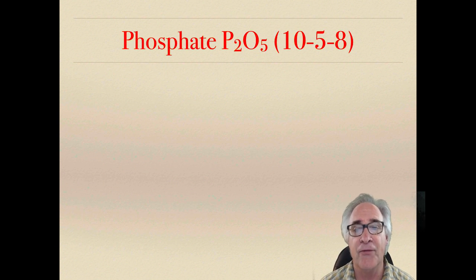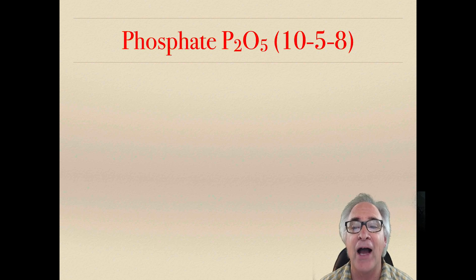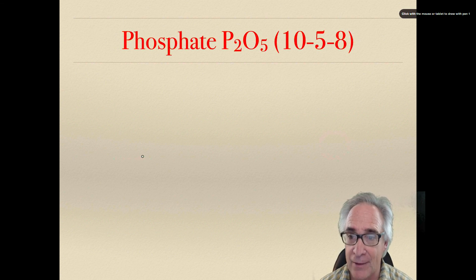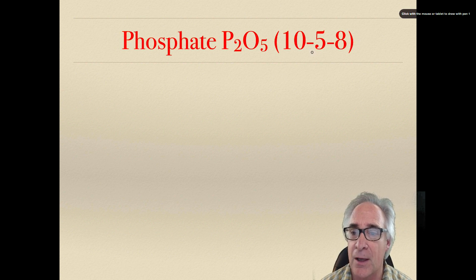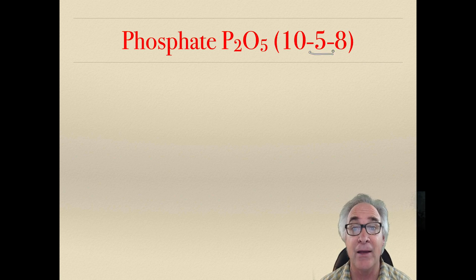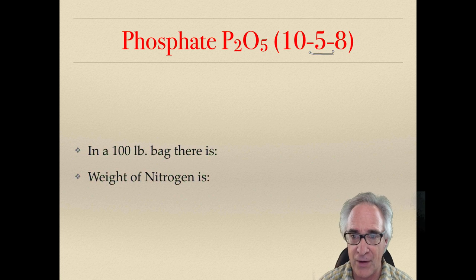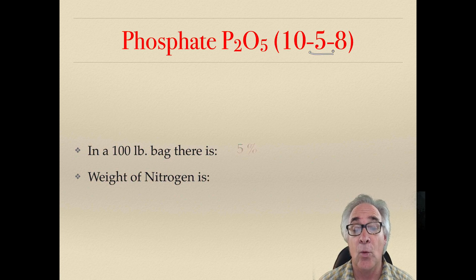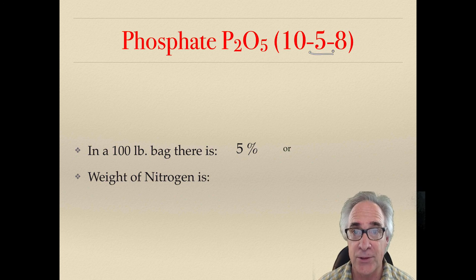And again, 10-5-8. We're looking at 5 now. We're going to be looking at the number 5 in this formulation, in this bag, same bag. It's 100 pounds of this 10-5-8 formulation. So we know it's 5%, and we're going to convert that to decimals. So that's .05.